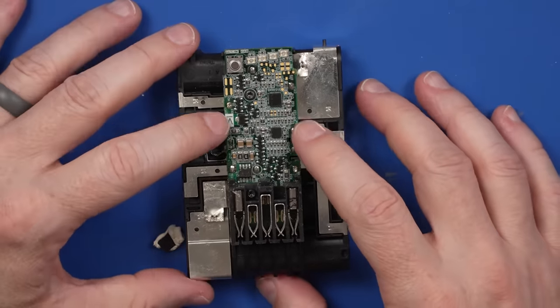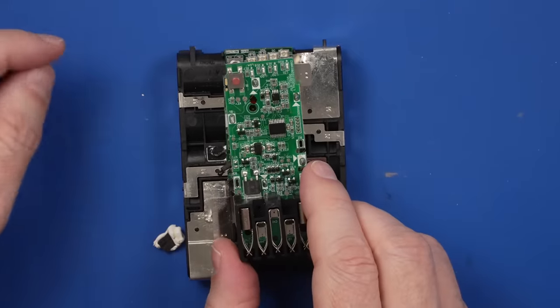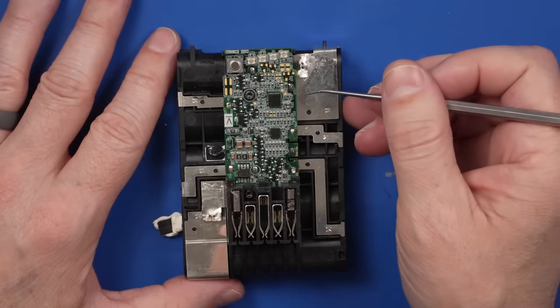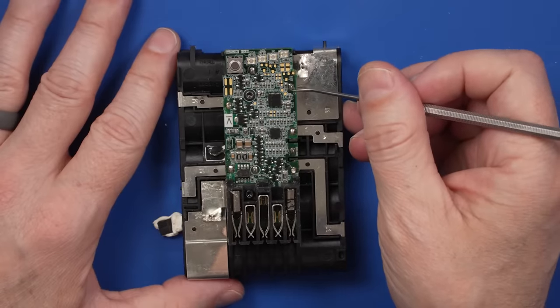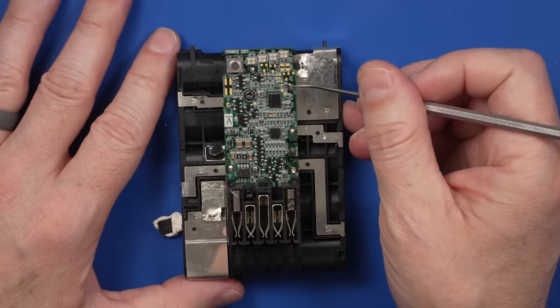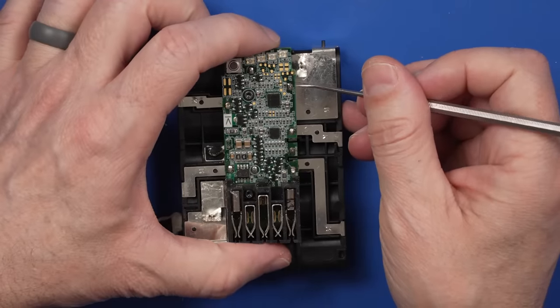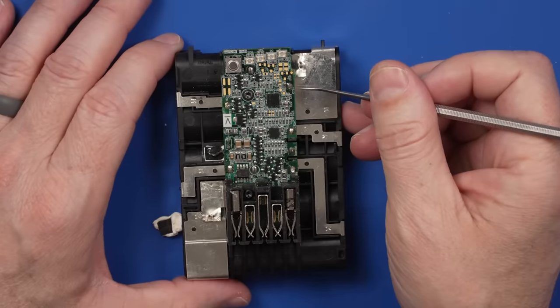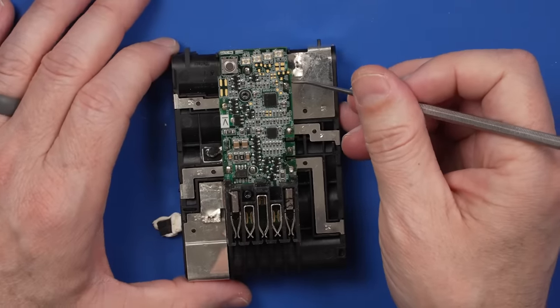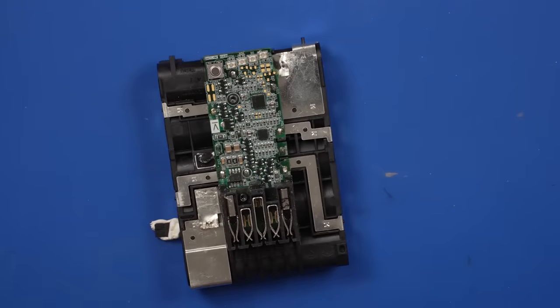So, let's get these desoldered, and then we can get this board off, install this board, and see if we can figure out how to spot weld. Looking at this, I think the best way to desolder these is to come in with some solder wick and wick up as much of the solder as we can out of these holes. And then I can also gently pull up on the board while I'm doing that. And that will hopefully free the board without causing any problems. I am going to remove these screws so I can pull up on the board as much as I need to.